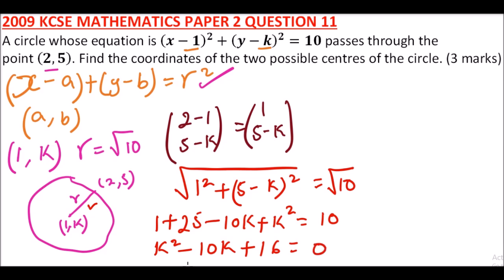That is by bringing 10 to this side and adding 1 to 25, so it will be k² - 10k, 26 minus 10 that will give you 16. When you solve this quadratic equation,